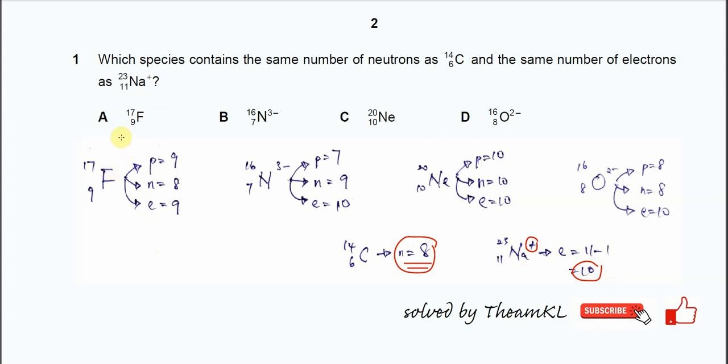For the fluorine, because it's given the proton number and the mass number or the nucleon number, the proton number we know is 9. Neutron number is 17 minus 9, we get 8. Because this one is neutral, therefore the proton number is same as the electron number, so the electron number is 9. So comparing with these two, therefore the fluorine is not the answer.